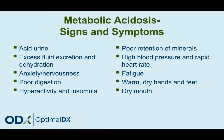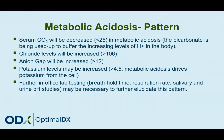Let's finish up by looking at the functional blood chemistry analysis pattern for metabolic acidosis. Your serum CO2 is going to be decreased below 25 — remember, the bicarbonate is being used up to buffer the increasing levels of H+ in the body. Chloride levels will be increased above 106. Your anion gap is going to be increased above 12, and you might see potassium levels going up above 4.5 as well. Metabolic acidosis drives potassium from the cell, and when potassium leaves the cell, it increases the serum levels of potassium.